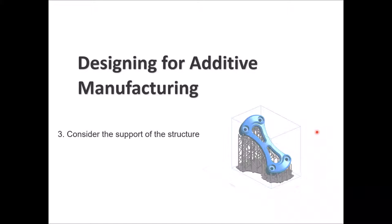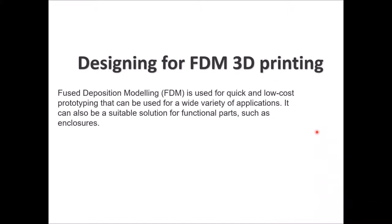Let's start with designing for FDM 3D printing — fused deposition modeling. It is basically used for quick and low-cost prototyping, where you can use it for a wide variety of applications. It is suitable as well for functional parts such as inclusions. Inclusions specifically will be discussed in detail regarding how to design them and all the good and bad sides of using 3D printing for that application, because of the importance of this application in this field.